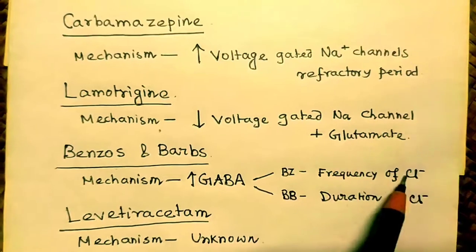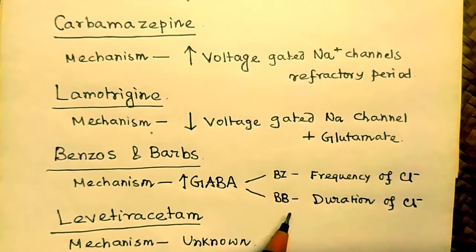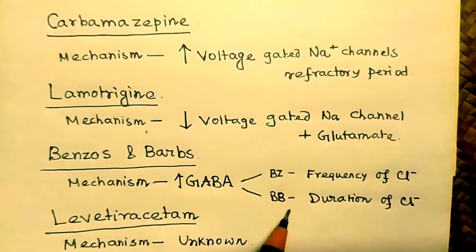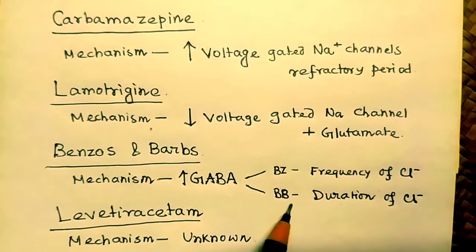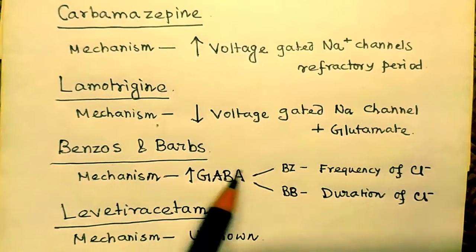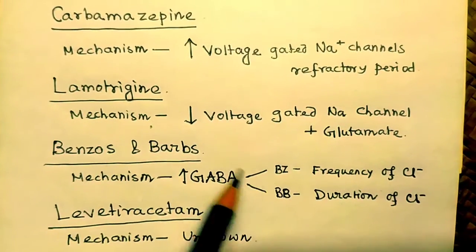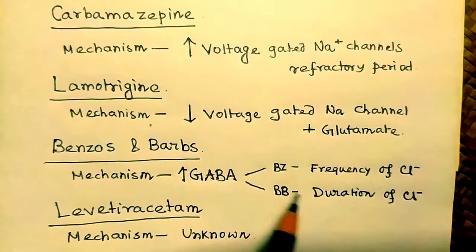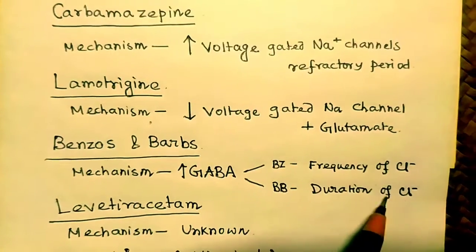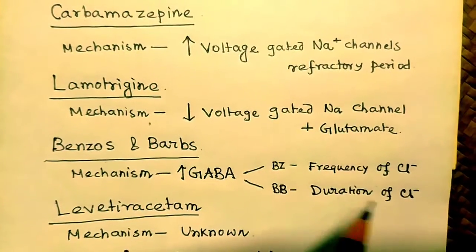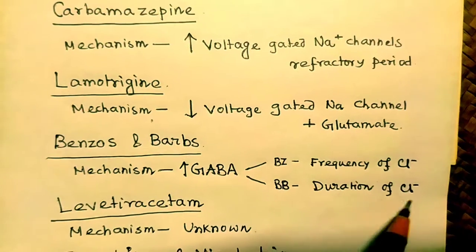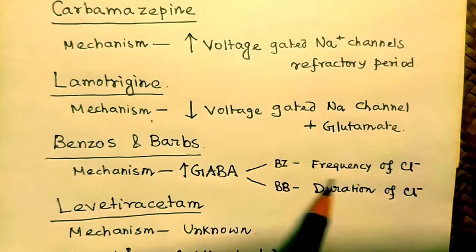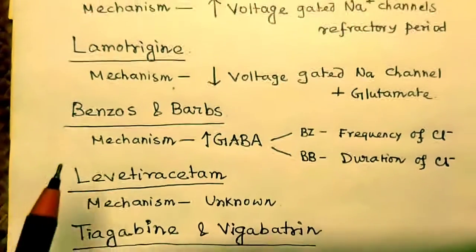The second drug in this group is barbituric acid. For barbiturates, remember 'D for duration' — barbituric acid increases the duration of chloride ion channel opening. So to summarize: benzodiazepines affect the frequency of chloride ion opening, while barbiturates affect the duration of chloride ion opening. Both work via the GABA mechanism.